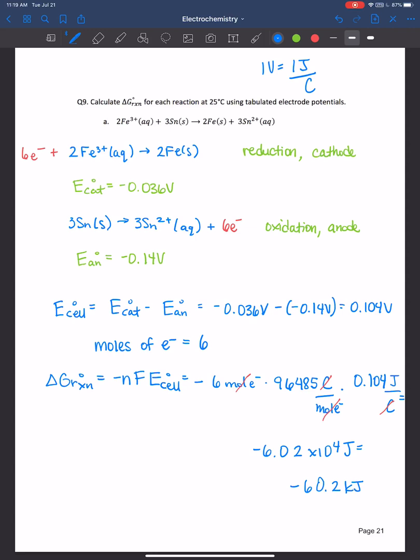Is this reaction spontaneous or non-spontaneous? Excellent. With a negative delta G, we're looking at something that is spontaneous. In addition, just looking at the cell potential, it's a positive cell potential. So that also indicates it's a spontaneous reaction. So both reinforce one another.